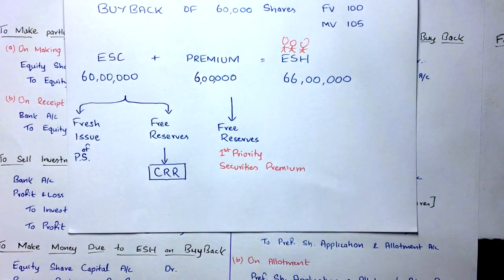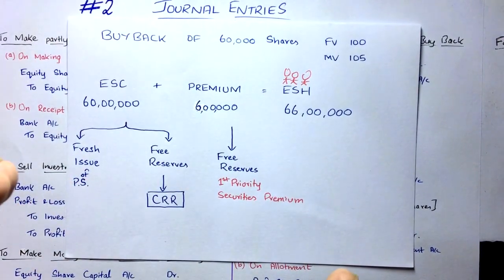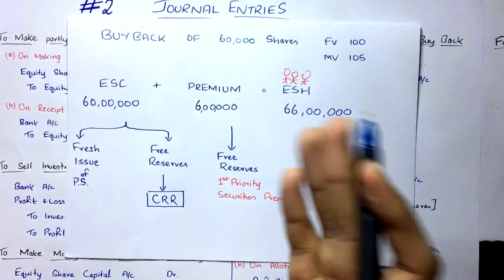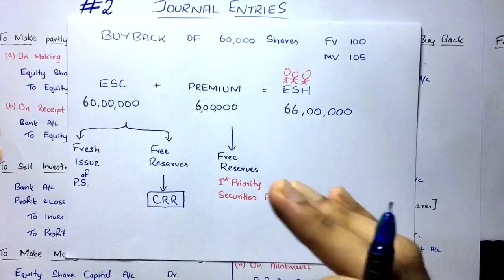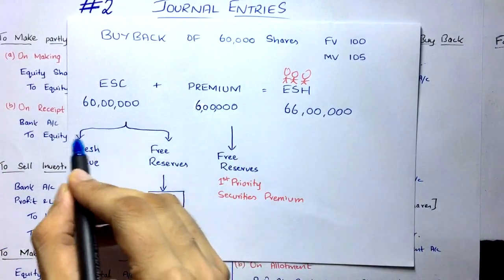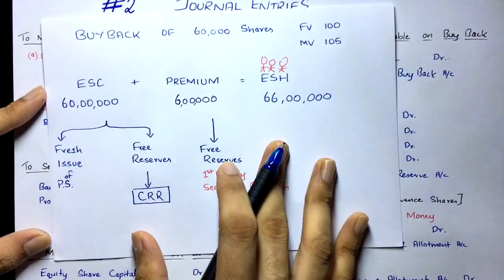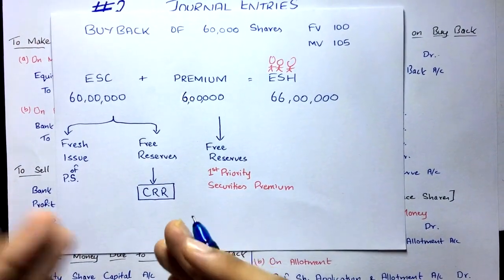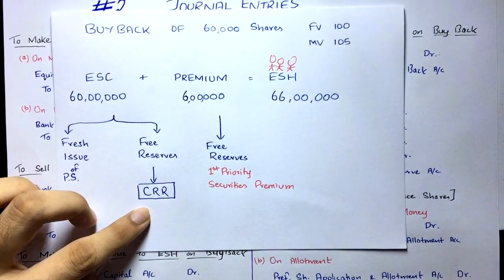The company also pays the face value to shareholders, but under Section 68 we have to replace that capital. Since the shares are being cancelled, the capital would disappear — but the Companies Act requires that the paid-up capital should not decrease. To comply, we replace the capital either through fresh issue of preference shares or by transferring free reserves to a special reserve called Capital Redemption Reserve (CRR).